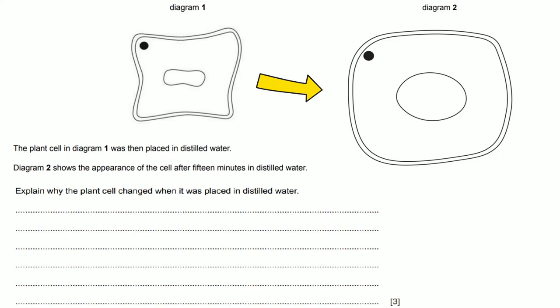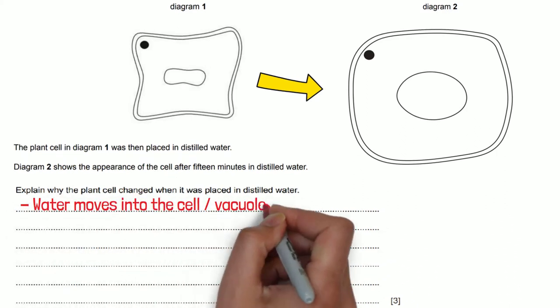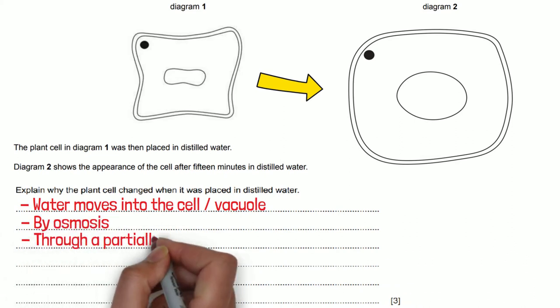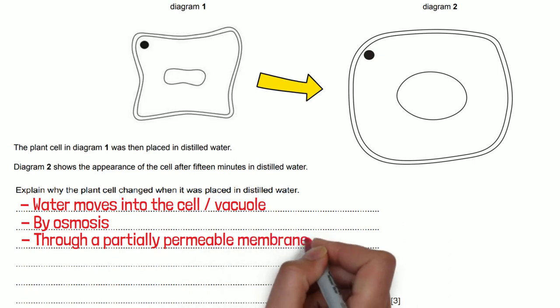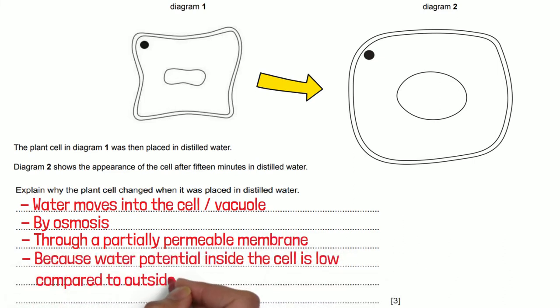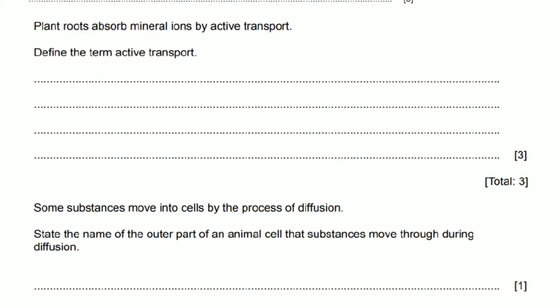Firstly the diagram two cell was placed in distilled water so we're probably going to be talking about water and water potential. We can say that water moves inside the cell by osmosis through a partially permeable membrane and this is because the water potential inside the cell is a lot lower than the environment outside which is the distilled water. Each one of these bullet points gets you one mark in the exam.